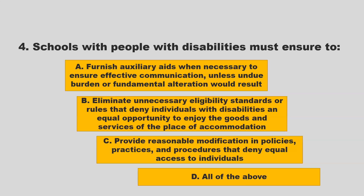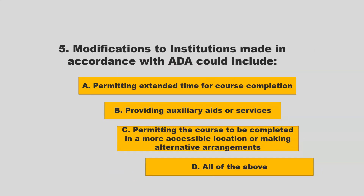Schools with people with disabilities must ensure to: furnish auxiliary aids when necessary to ensure effective communication unless undue burden or fundamental alteration would result; eliminate unnecessary eligibility standards or rules that deny individuals with disabilities an equal opportunity to enjoy the goods and services of the place of accommodation; provide reasonable modification in policies, practices, and procedures that deny equal access to individuals; or all of the above. If you chose D — all of the above — you are correct.